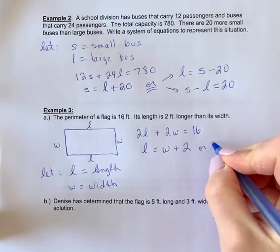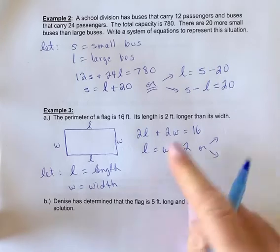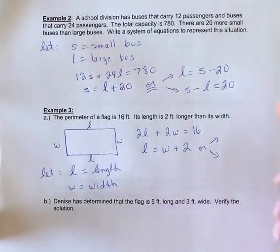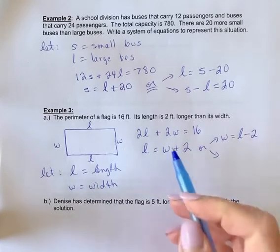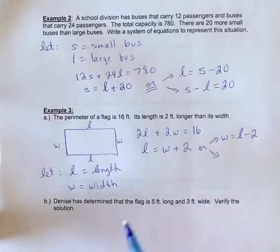Again, I just want to point out, perhaps you thought about this in terms of W. You could have also said W is the length minus the two feet. And again, these are equivalent. If you move two to the other side, it would look the same.